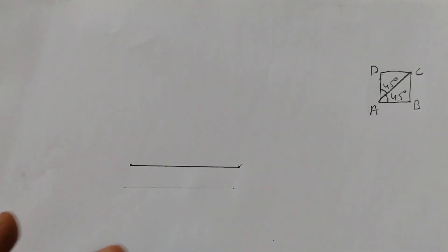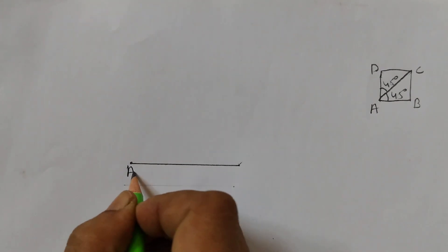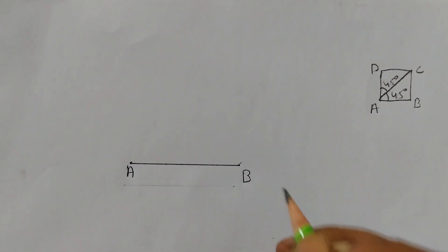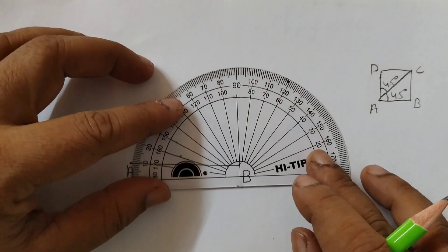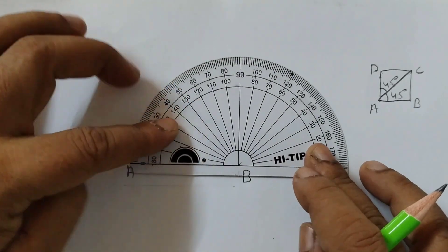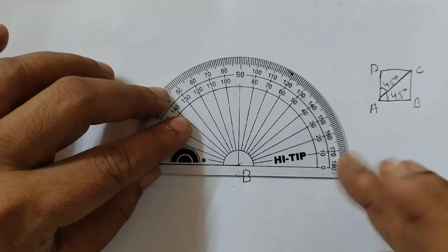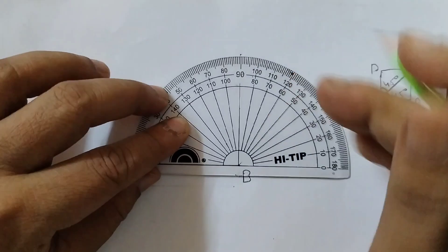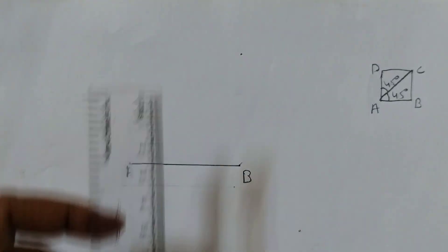Draw perpendicular at B. We will label this as A and B. Draw a perpendicular at B using the protractor. Place it like this, and 90 degrees here will give you the perpendicular. Join the points.